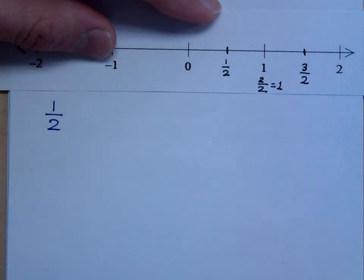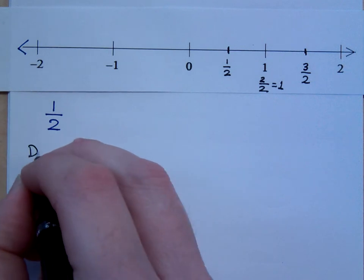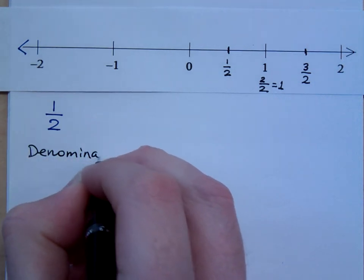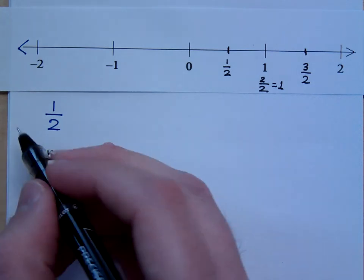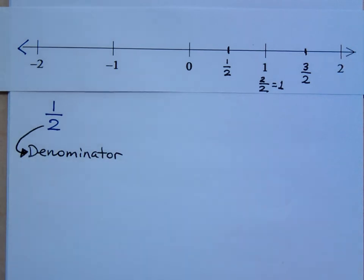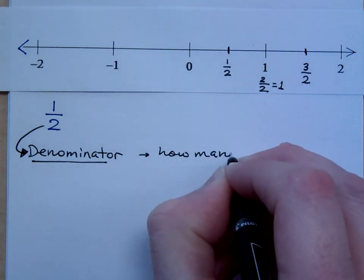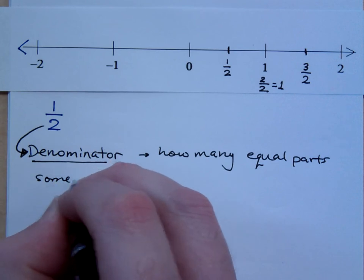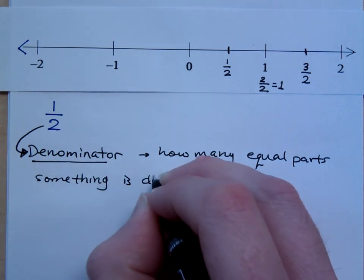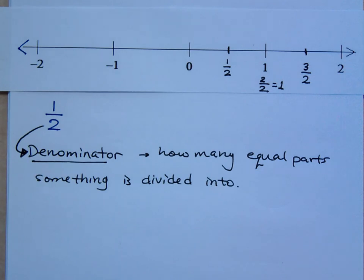The denominator tells you how many parts you divide something into. In this fraction, one-half, the two is the denominator. Let's talk about what the denominator means: this is how many equal parts something is divided into. It's how many equal parts something is divided into.